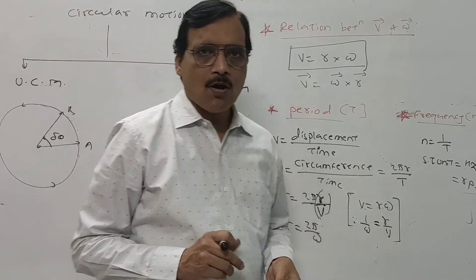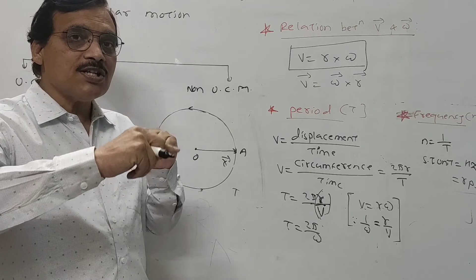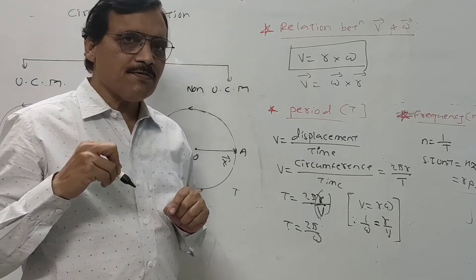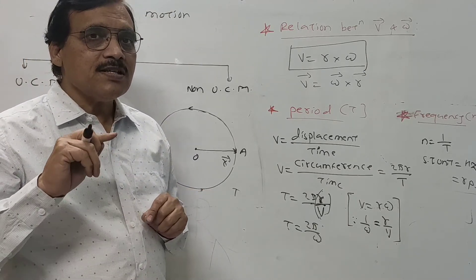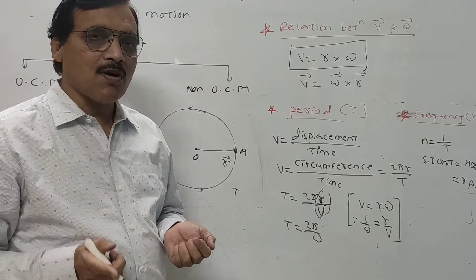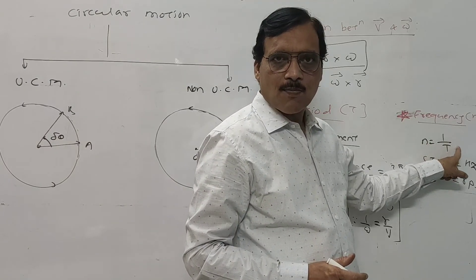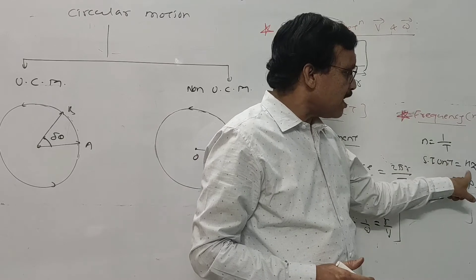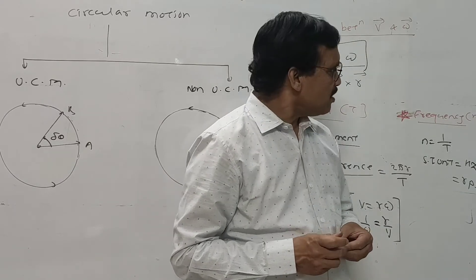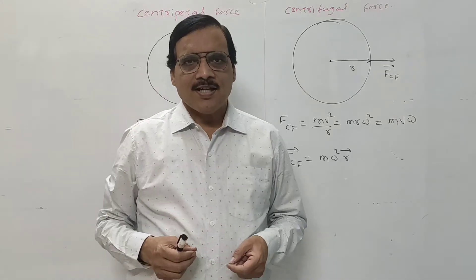Frequency of circular motion means the number of revolutions performed by a particle in unit time. It is denoted by n and defined as n equals 1 upon T. Its unit is Hertz, which means rotations per second.